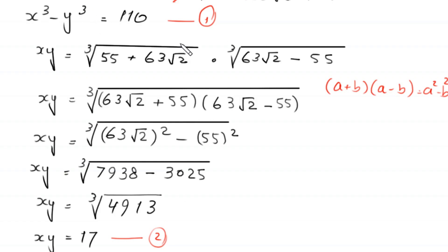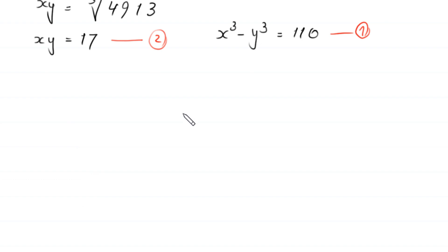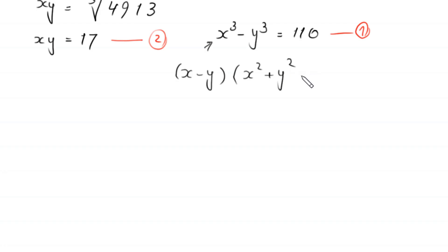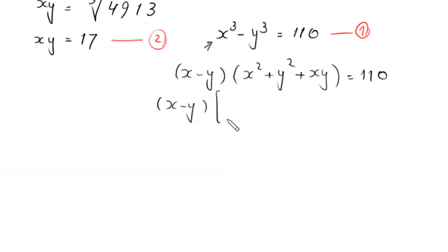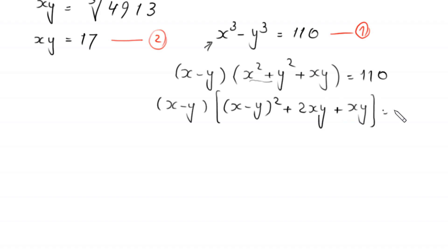Recalling Equation 1: x³ − y³ = 110. The left side factors using the identity a³ − b³ = (a − b)(a² + ab + b²), giving (x − y)(x² + xy + y²) = 110.